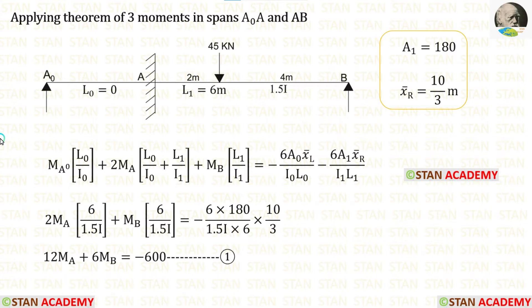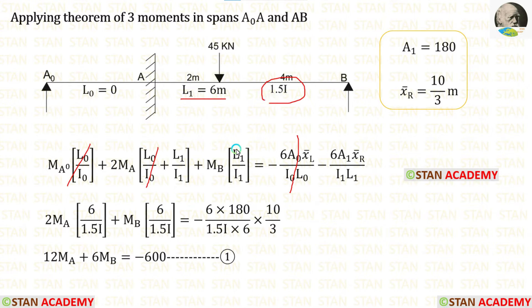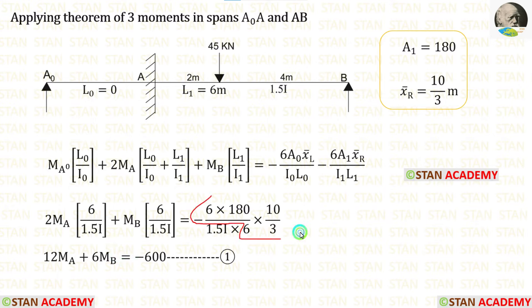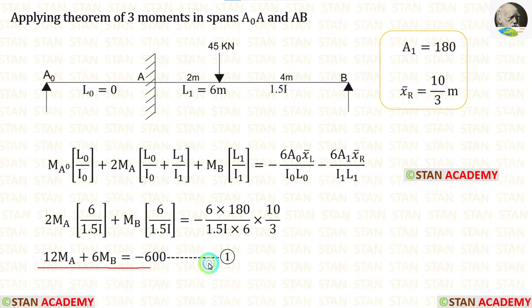Now let us apply all the values in the equation. The TAM terms are 0. L1 = 6 m and I1 = 1.5I. We apply A1 = 180 and x-bar right = 10/3. On both sides, 1.5I is common, so we eliminate it. 2 × 6 gives 12. When we calculate these values, we get minus 600. Let us keep this as equation number 1.